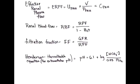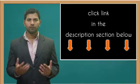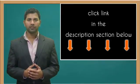What is the Henderson-Hasselbalch equation for extracellular pH? The Henderson-Hasselbalch equation for extracellular pH is 6.1 plus the log of bicarbonate over 0.03 times the partial pressure of carbon dioxide.